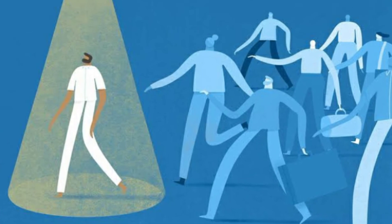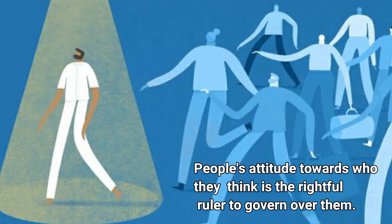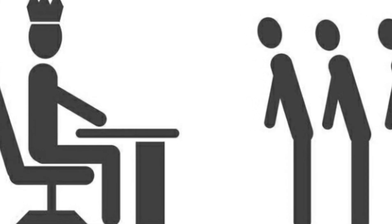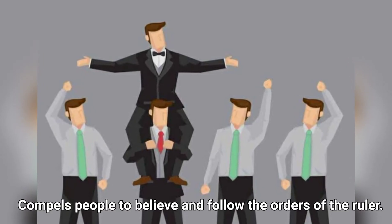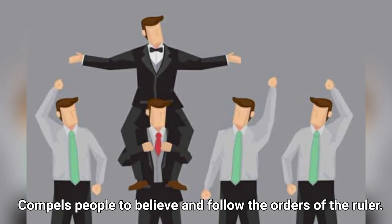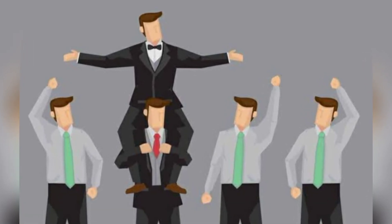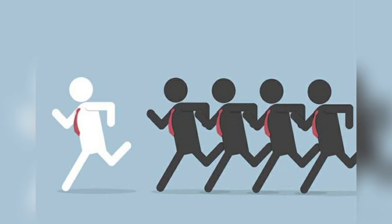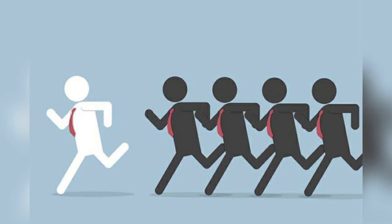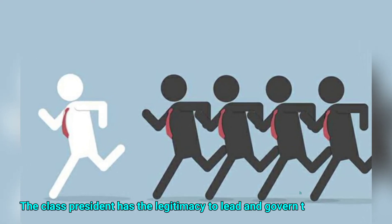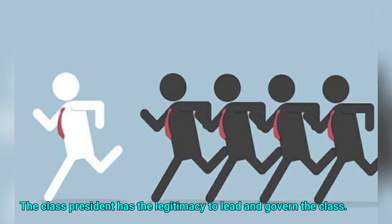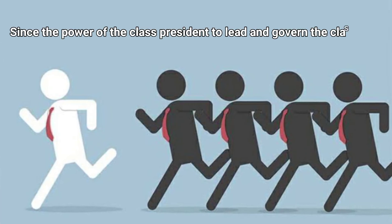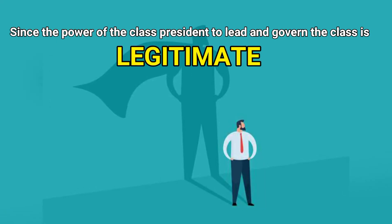Legitimacy is the people's attitude towards who they think is the rightful ruler to govern over them. This idea compels people to believe and follow the order of the ruler. For example, the class president is the rightful ruler of the class because he or she was elected by the majority of the class. With this, the class president has the legitimacy to lead and govern the class, and the class will generally listen and follow.